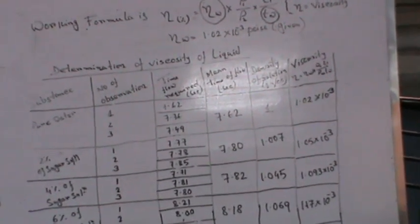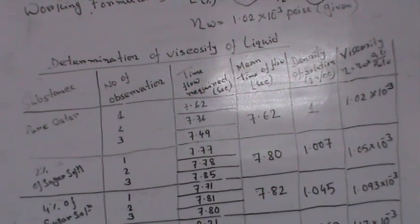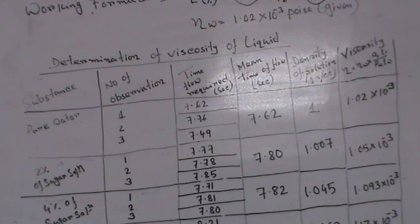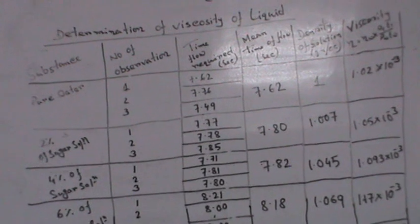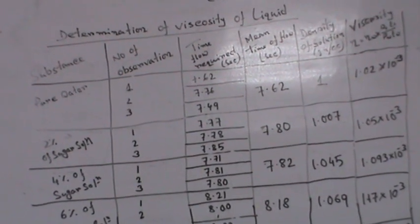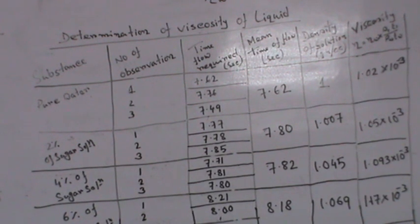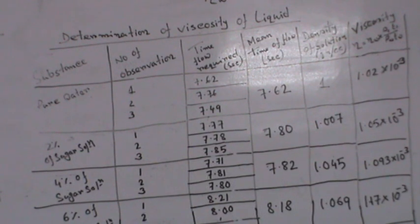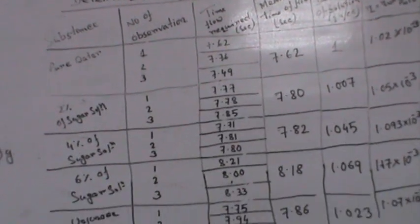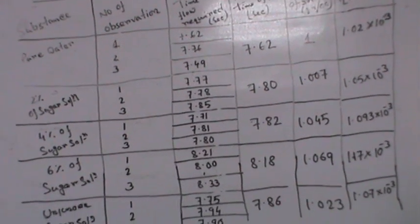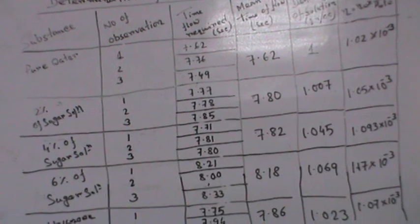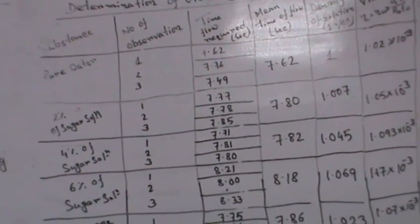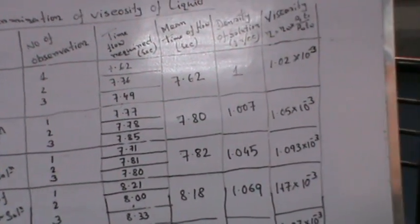In the table for determination of viscosity, the columns are: substrate, number of observations, time of flow required in seconds, mean time of flow in seconds, density of solutions in g/cc, and viscosity. For pure water, two percent, four percent, six percent, and unknown sugar solutions, the mean times of flow obtained were 7.62, 7.80, 7.82, 8.18, and 7.86 seconds respectively. Using these values along with the densities, the viscosities were calculated.